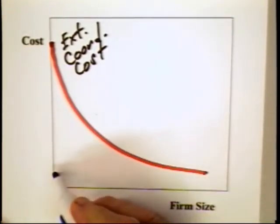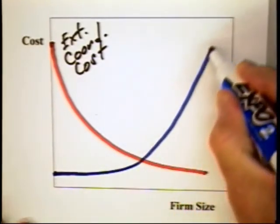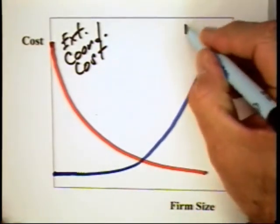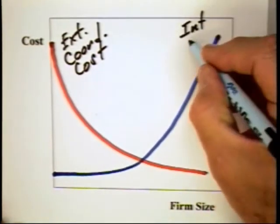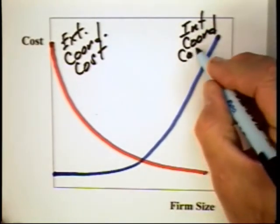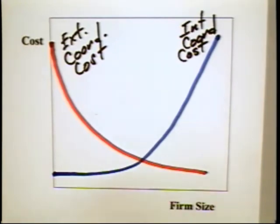On the other hand, the internal coordinating costs — which are suggested by the Mancur Olson type of analysis — expand with the size of the firm. So we have one curve expanding and one curve contracting as the size of the firm increases.